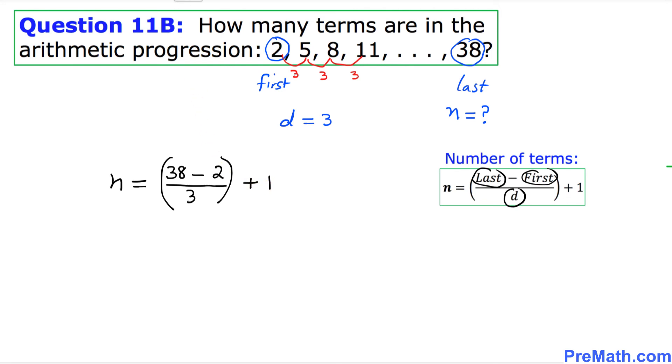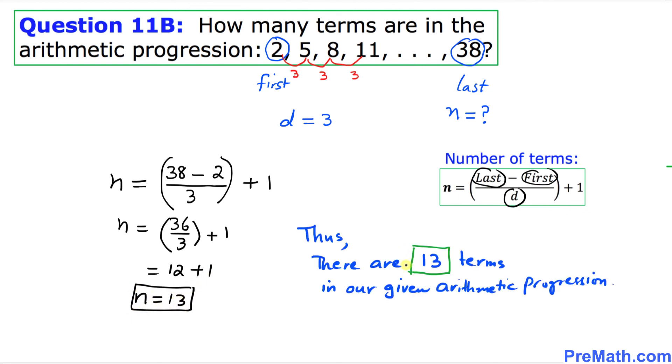Let's simplify that one. So n equals, on the top is going to be 38 take away 2 is 36, divided by 3, and then plus 1 at the end. So 3 goes into 36 twelve times and then add 1, so n turns out to be 13. Thus we have 13 terms in our given arithmetic progression and that's pretty much it.